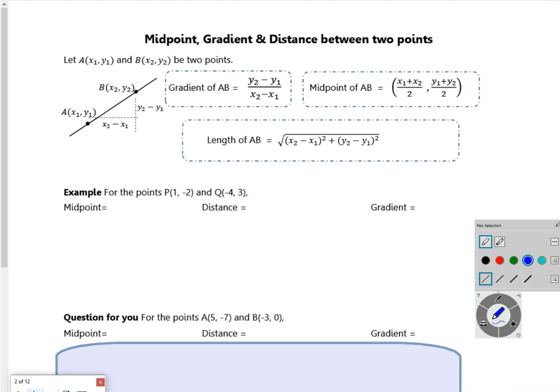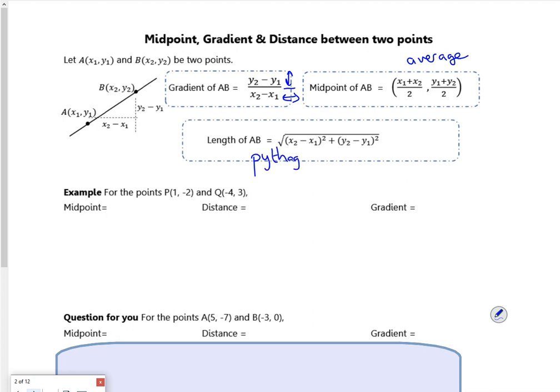Stuff you should know from GCSE: the gradient between two points is change going up divided by change going across. The midpoint is just the average of the x's and the average of the y's. For the length, you use Pythagoras - that's the proper full formula. What I tend to do is draw a little picture so I can see how far across it goes.